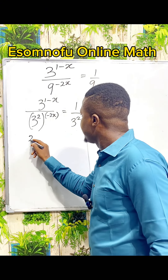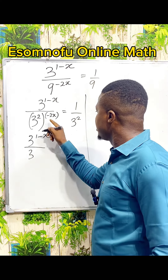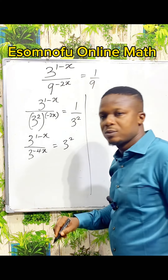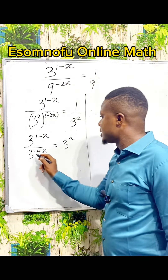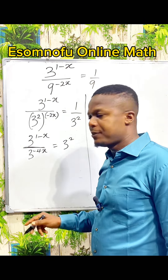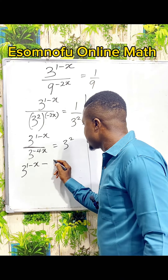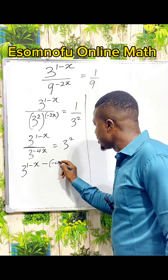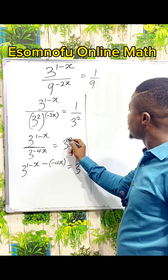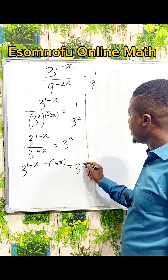So we have 3 power 1 minus x, all over 3 power 2 times minus 2x, which is minus 4x, equal to 3 power 2. From the laws of indices, whenever you are having division and the bases are the same thing, simply subtract the powers. So this can be 3 power 1 minus x. Division is minus, coming here we have minus 4x. Everything is 3 power. 1 over 3 power 2 is 3 power minus 2.